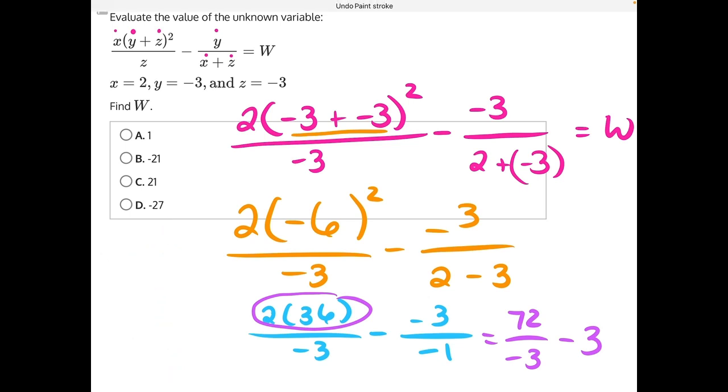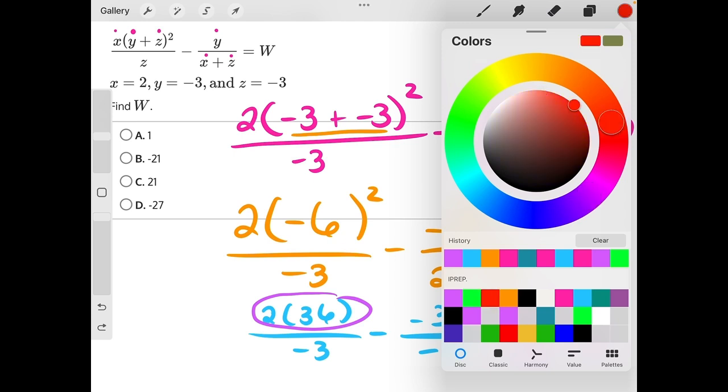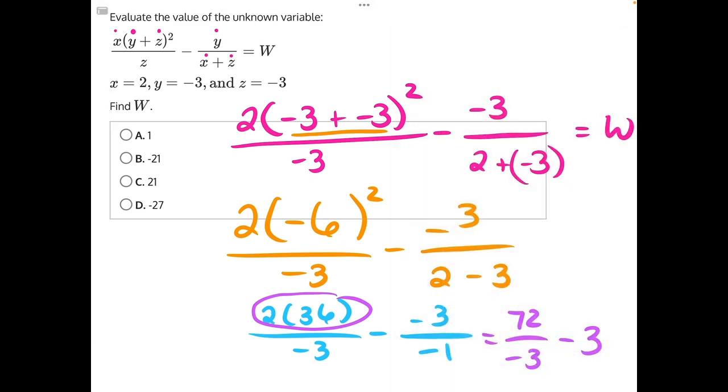So that fraction will simplify down, and I will put that information up here. 72 over negative 3 simplifies down to be a negative 24 minus 3.